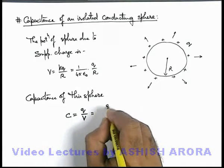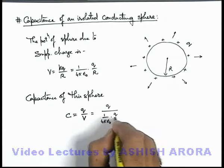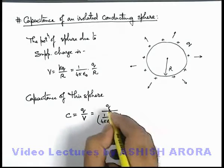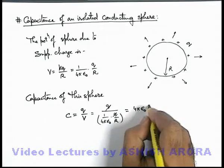If we substitute the value of potential, which is 1/(4π ε₀) times q/r, then q gets cancelled out and the value of capacitance we get is 4π ε₀ r.